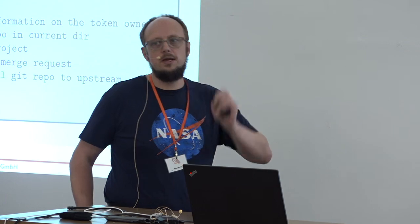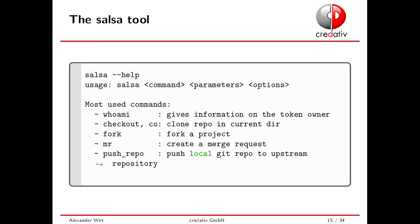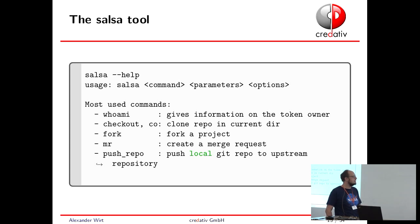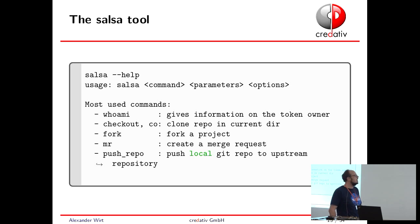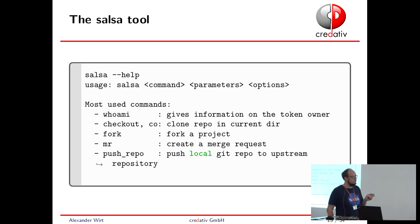If you want to use the API but don't want to use it on your own, there's a tool called Salsa. It's included in dev-scripts and is therefore probably already on your system. It helps you with doing common things like forking a project, creating merge requests, pushing your repo to an upstream repository, or just cloning something. The guys that have written that tool will accept patches or feature requests to improve it. So if you want to use the API but don't want to use it on your own, use Salsa — it should get you most features you need.